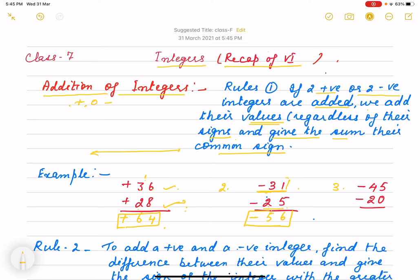Same way here, third question: -45 and -20. What do we do? We add. Don't change the sign, leave it this way. 5 plus 0 is 5, 4 plus 2 is 6, and the negative sign stays.